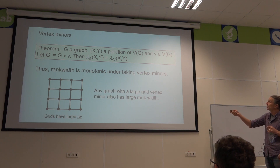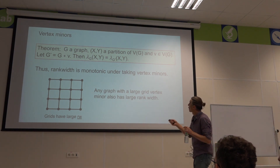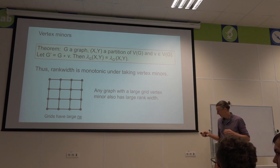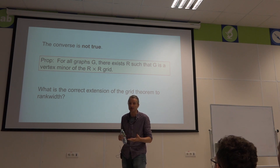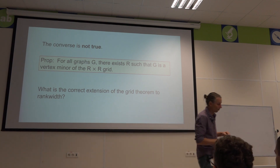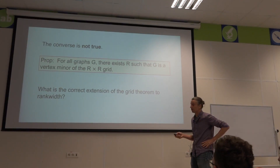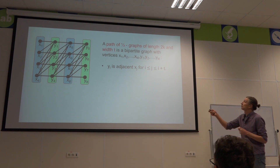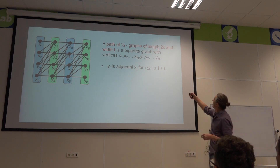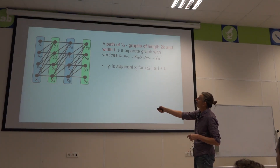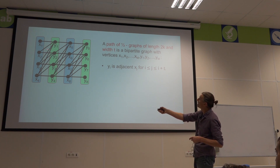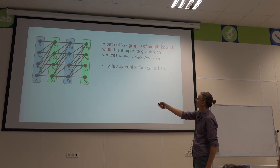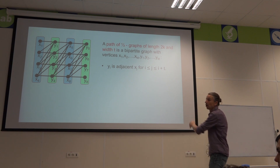Rank width is monotonic under taking vertex minors, so any graph with a large grid vertex minor also has large rank width. However, grids are universal — any graph can be obtained as a vertex minor of a grid — so we need a different notion of 'grid' here. What we want is the path of half graphs, of length 2k and width t. It's a bipartite graph alternating between x-vertices and y-vertices, where between each group of t consecutive x's and y's we place a half graph.